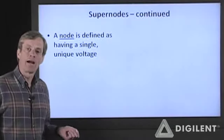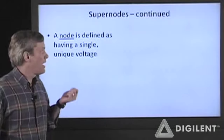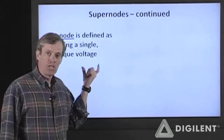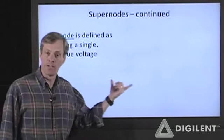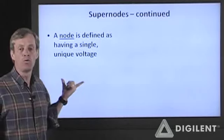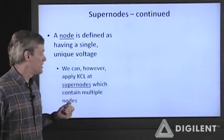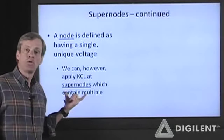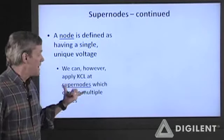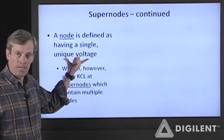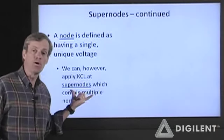Let's give a little more background on supernodes. We defined nodes as a position in a circuit which has a single, unique voltage — it can be spread out with perfect conductors, but there can be no voltage difference within a single node. What we're going to do is generalize that to something called a supernode. Some authors call this a generalized node. It doesn't fit the strict node definition; however, we can apply KCL at a supernode.